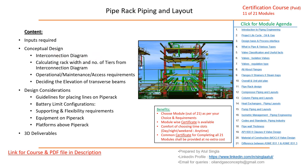We'll calculate the width and number of tiers of the rack based on the interconnection diagram. Operational, maintenance, and accessibility requirements will be discussed, including how to decide the elevation of the transverse beam. Battery limit configurations — three types — will each be discussed in detail, along with supporting and flexibility requirements and 3D deliverables associated with pipe rack.